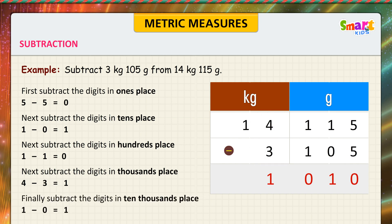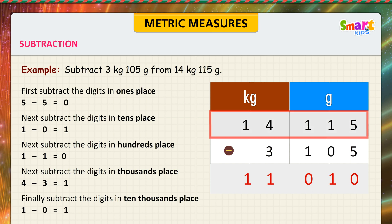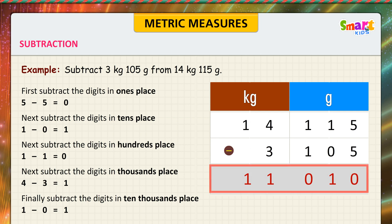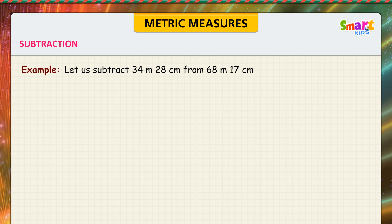Next, subtract the digits in the thousands place: 4 minus 3 is equal to 1. Finally, subtract the digits in the ten-thousands place: 1 minus 0 is equal to 1. Therefore, 14 kilograms 115 grams minus 3 kilograms 105 grams is equal to 11 kilograms and 10 grams.